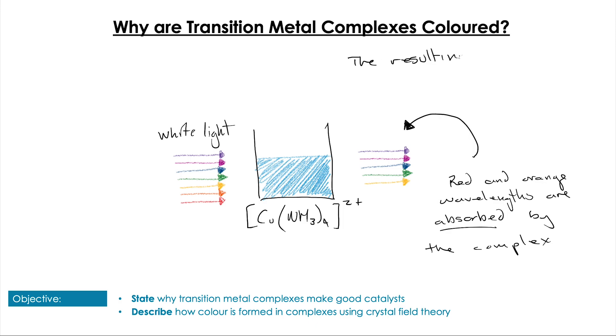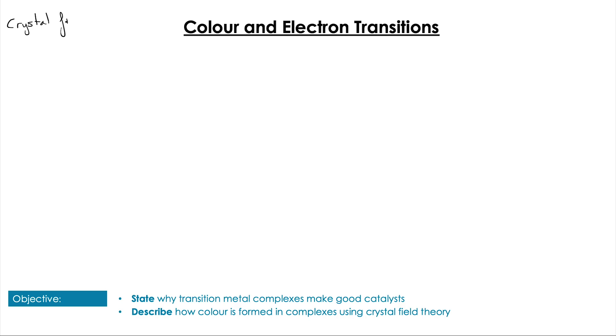Well, if we think about passing white light through this complex, there must be some absorbed wavelengths of light. Indeed, in this case, the red and orange wavelengths are absorbed by the complex, and that allows for the transmission of the remaining wavelengths of light. The resulting transmitted light is what gives the complex solution its characteristic color.